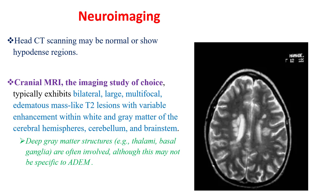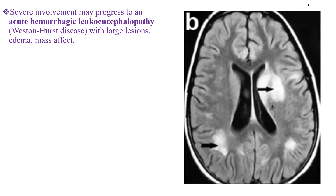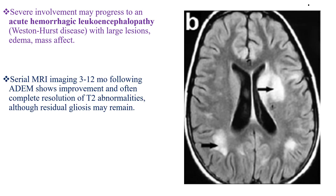Deep grey matter structures are often involved, although this may not be specific to ADEM. Severe involvement may progress to acute hemorrhagic leukoencephalopathy with large lesions, edema, and mass effect. Serial MRI imaging 3 to 12 months following ADEM shows improvement and often complete resolution of abnormalities, although residual gliosis might remain.